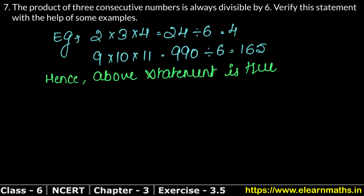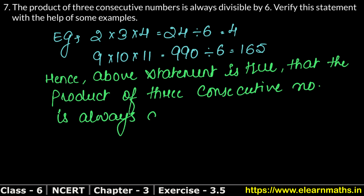We can take any example and verify. The above statement is true: the product of three consecutive numbers is always divisible by 6. Answer.